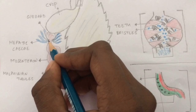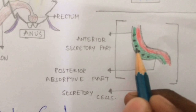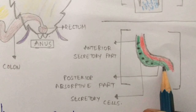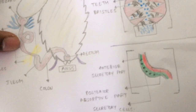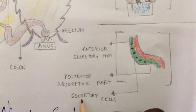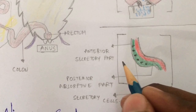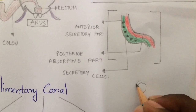Now let us zoom into the mesentron. The mesentron is mainly divided into the anterior secretory part — shown in green — and the posterior absorptive part — shown in red. At the anterior part, it mainly consists of secretory cells, shown as black colored dots. The secretory cells mainly secrete enzymes, and these enzymes help in the formation of the peritrophic membrane.